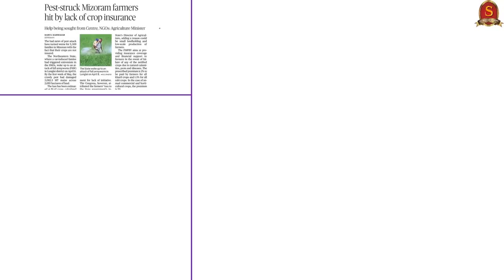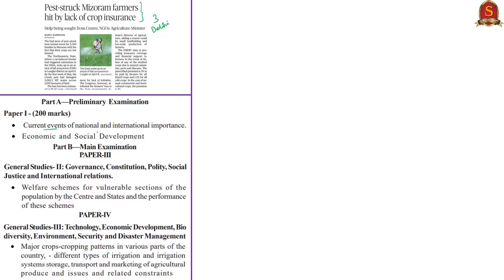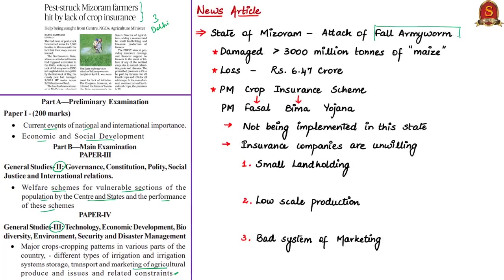The next news article is 'Pest-struck Mizoram Farmers Hit by Lack of Crop Insurance.' This article appears on page number 3 of the Delhi edition. The content is relevant in your prelims preparation under current events of national importance and economic and social development, and in your mains preparation under welfare schemes for vulnerable sections of the population and under marketing of agricultural produce. This news article states that a pest named fall army worm is attacking crops in the state of Mizoram, and more than around 3,000 metric tonnes of maize was damaged in around 2,000 hectares of land.